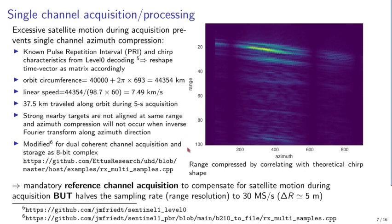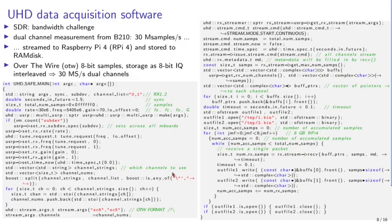Unfortunately, there is no sample software from Ettus Research for fast dual-channel 8-bit over-the-wire UHD streaming. We took inspiration from the RX multi-samples example and modified it for our objective. The software sets parameters for both channels: frequency at 5.4 GHz, data rate at 30 MHz per channel, and gain at 70 dB for both channels.